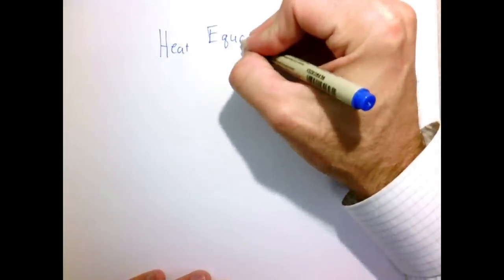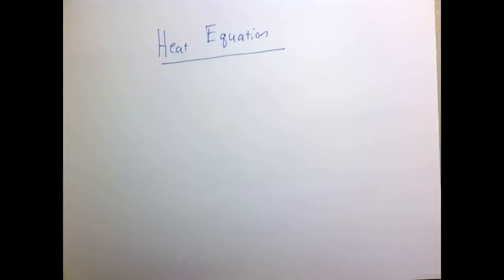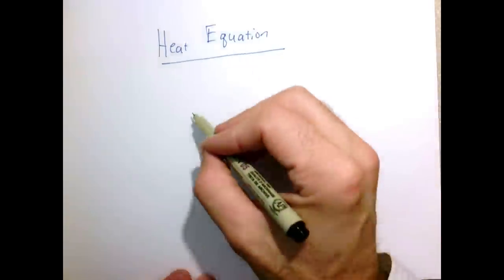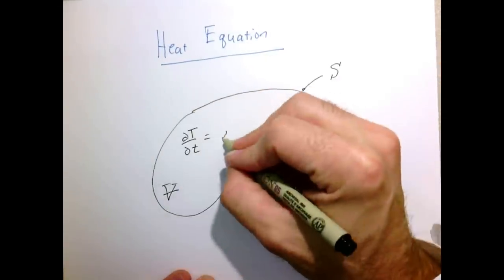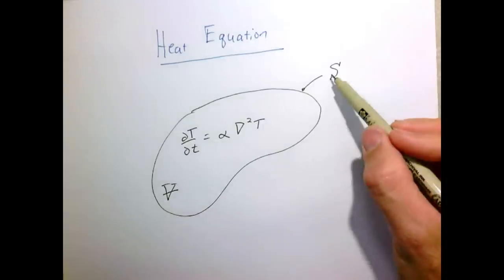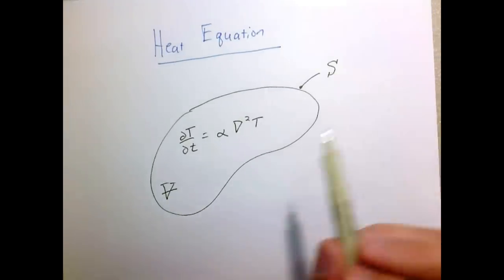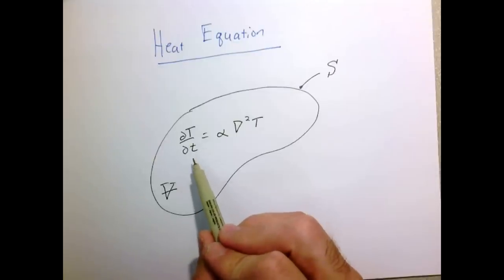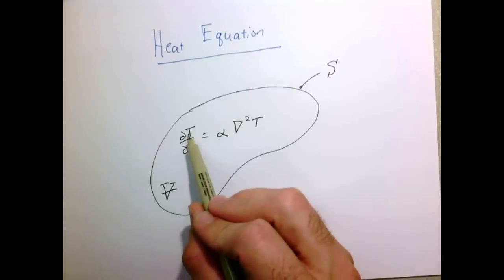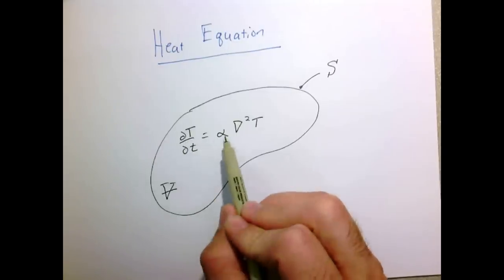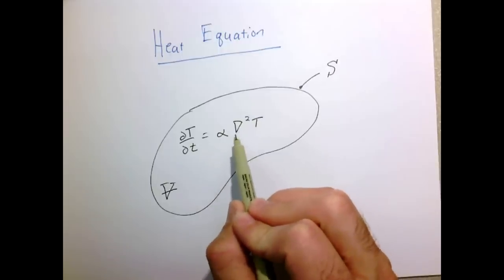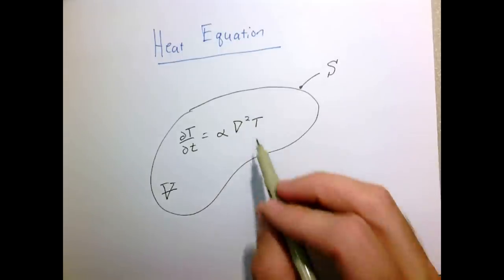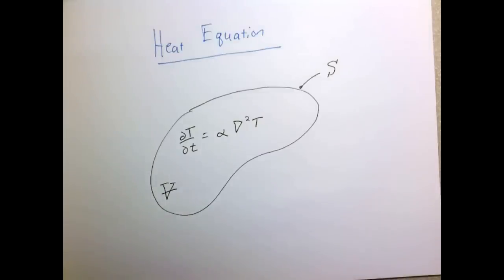In today's lesson, we're going to talk about the character of the heat equation. So if you recall from last time, in general, we have some region of a solid. Its volume is V, bounded by surface S, and the equation for the evolution of the temperature inside that volume is the partial derivative of the temperature with respect to time equals the thermal diffusivity times our second derivative operator, the del squared operator, times the temperature.